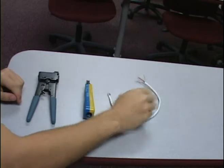Okay, so here we have our tools for wiring. Our crimper, punch down, Cat5 cable, RJ45 male end, and RJ45 female end.